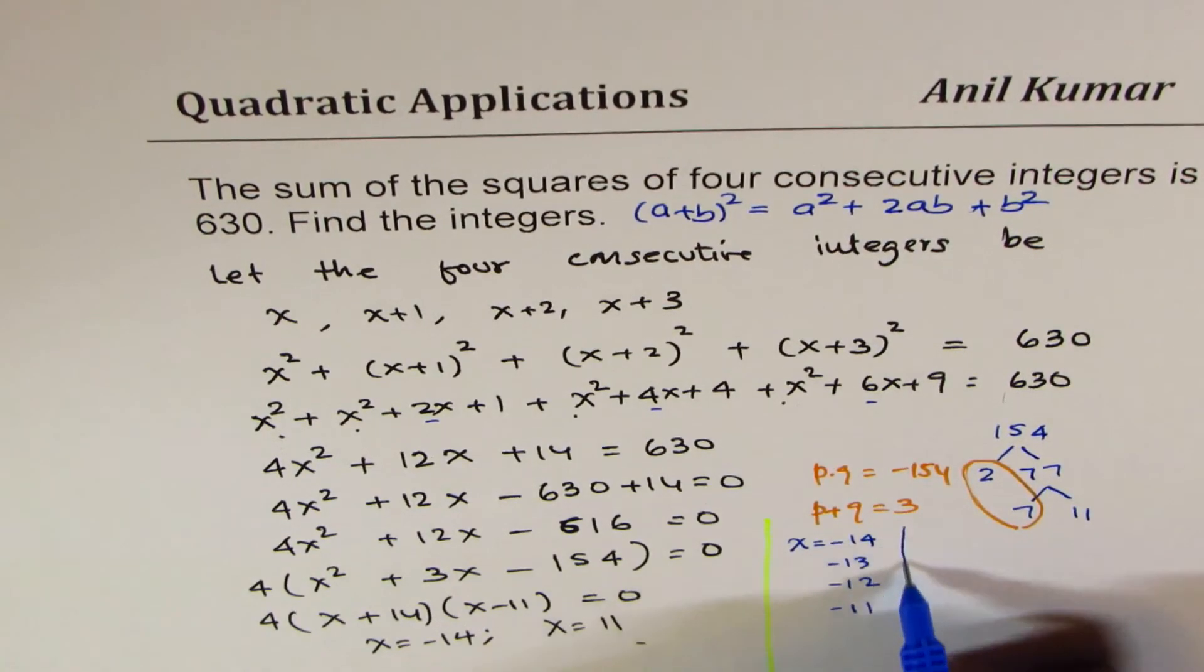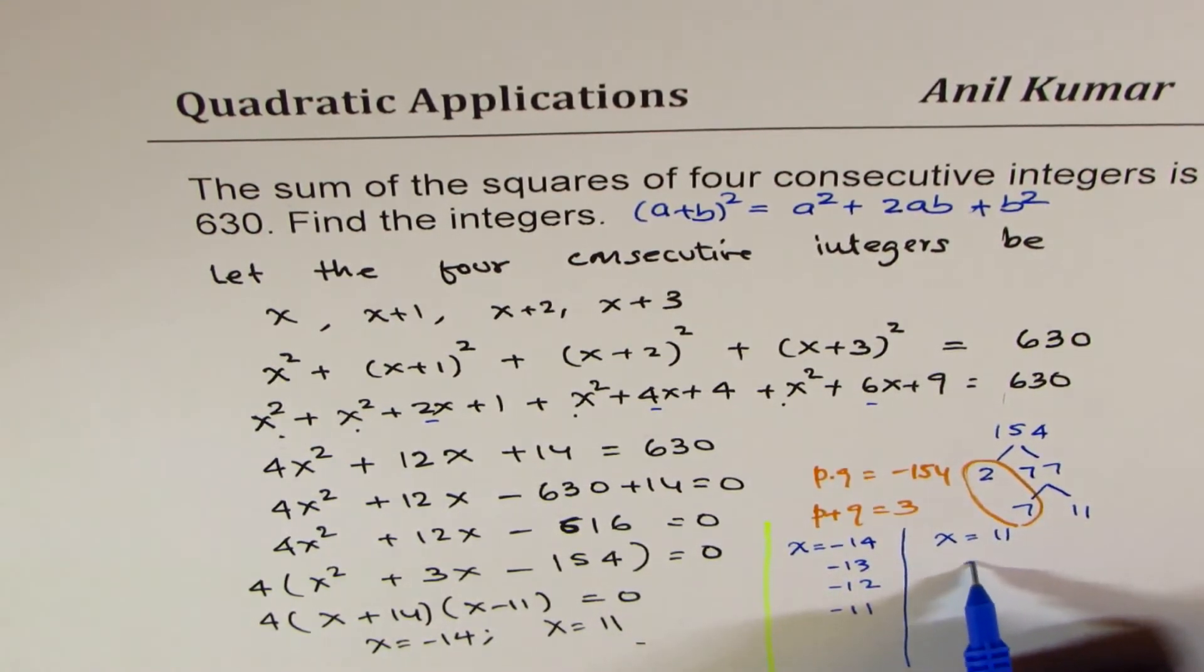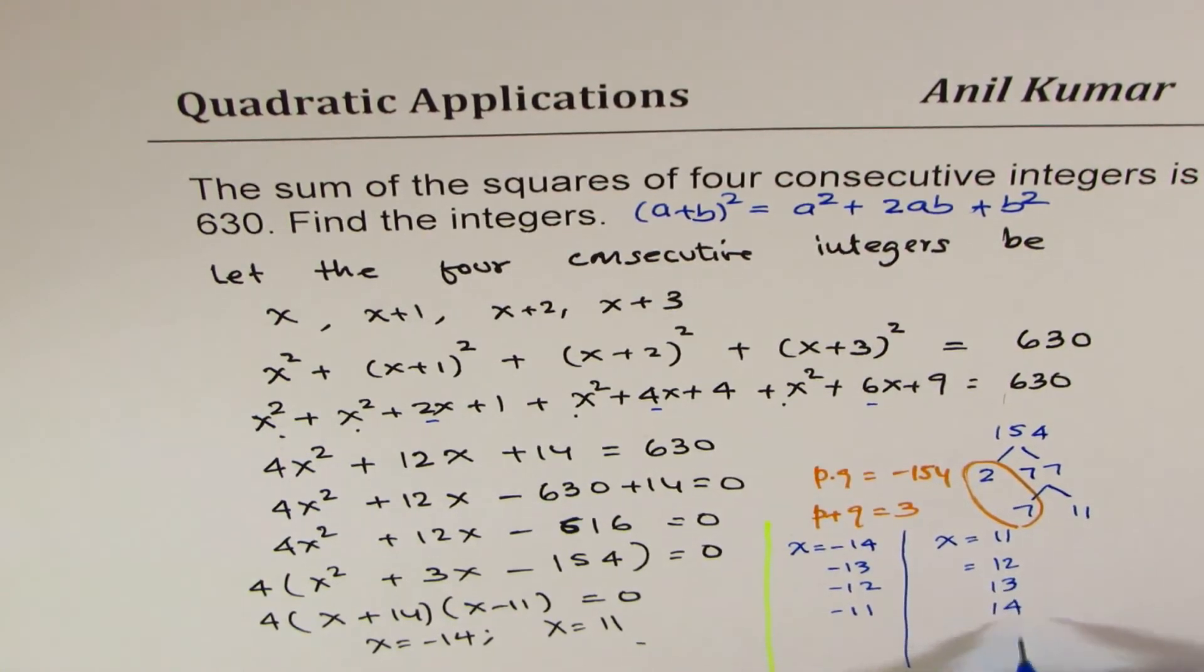That becomes one set, and the other will be when you take x equals to 11. And when you add one, then you get 12, 13, and 14.